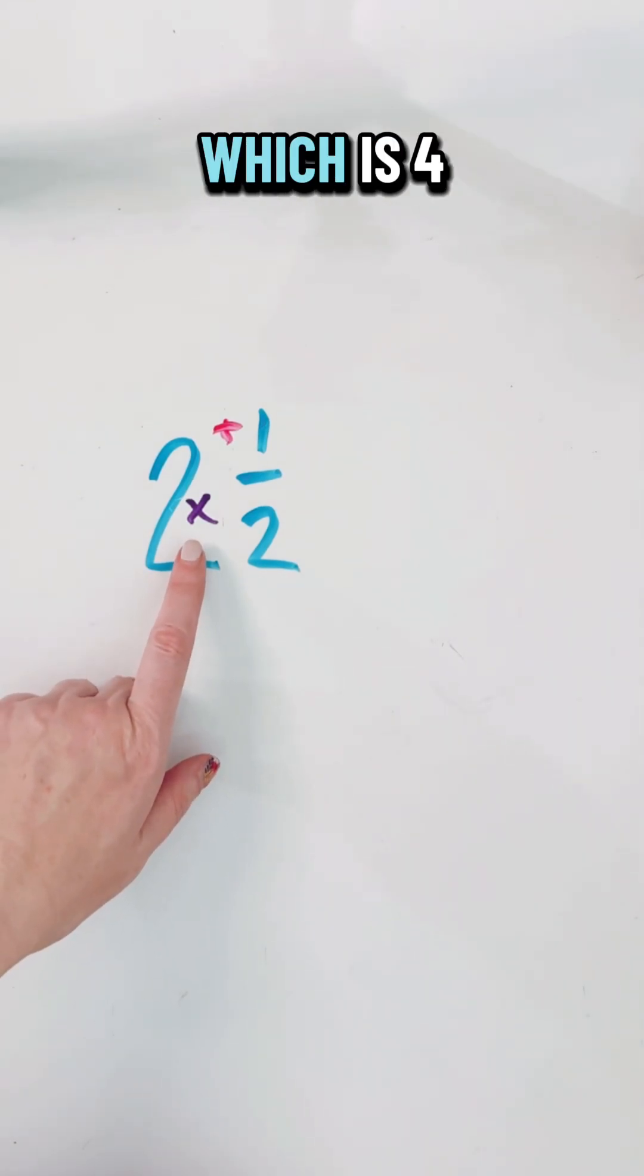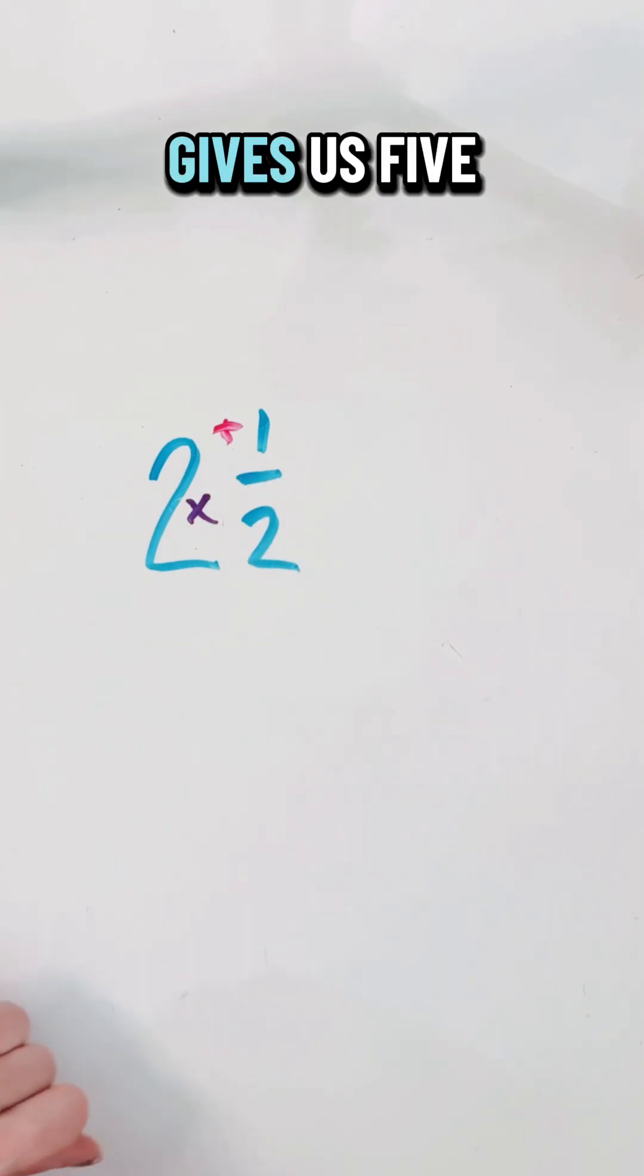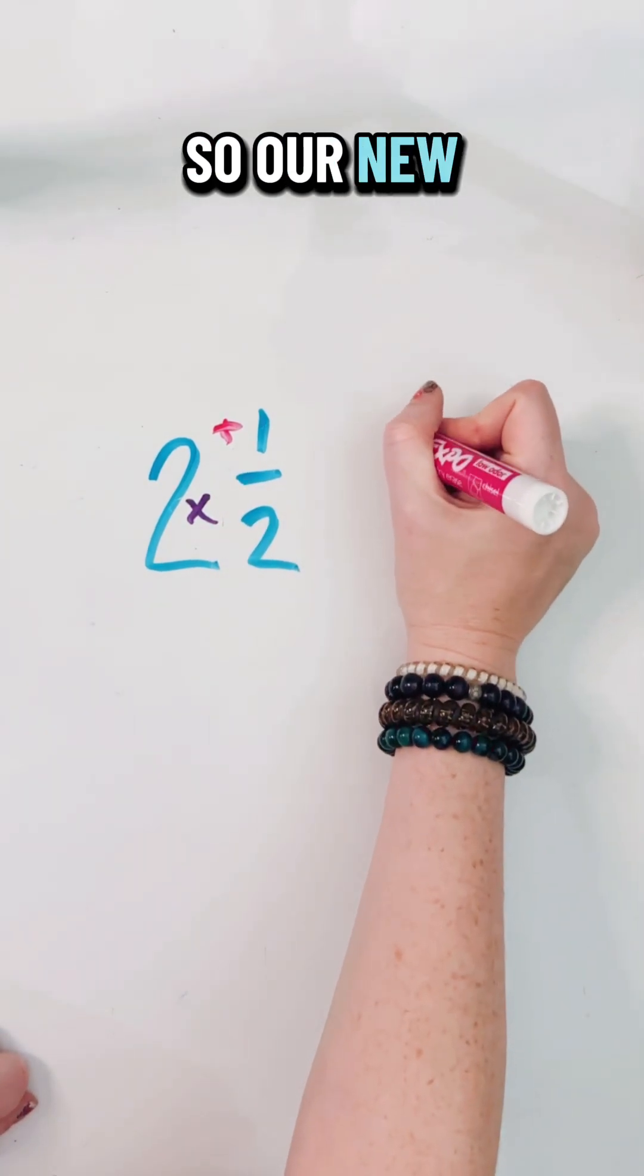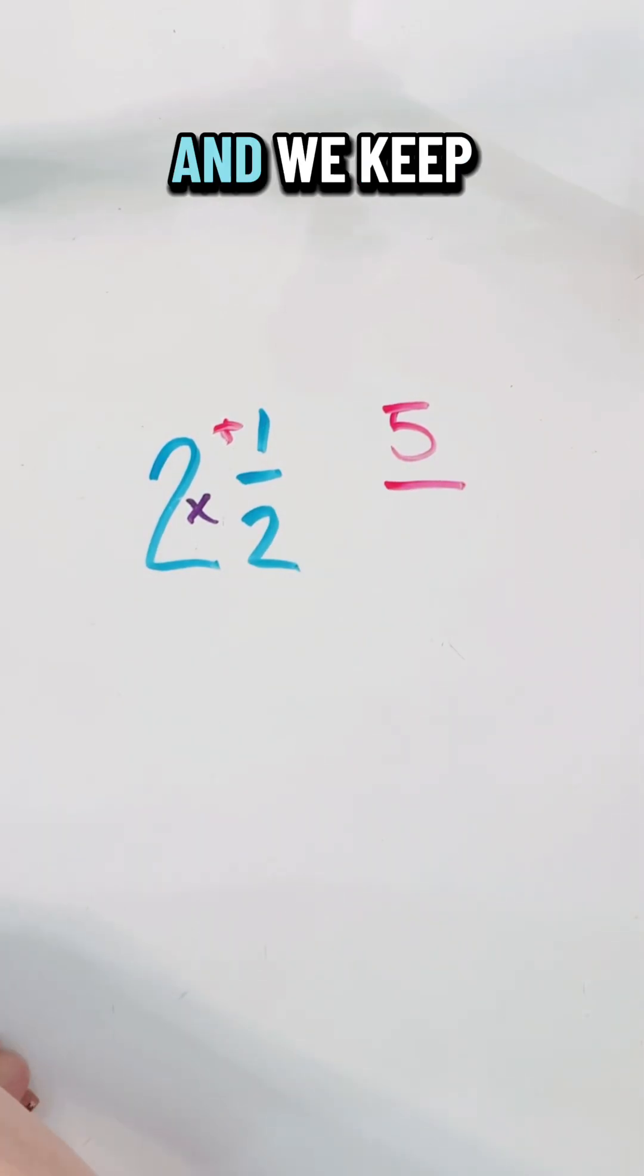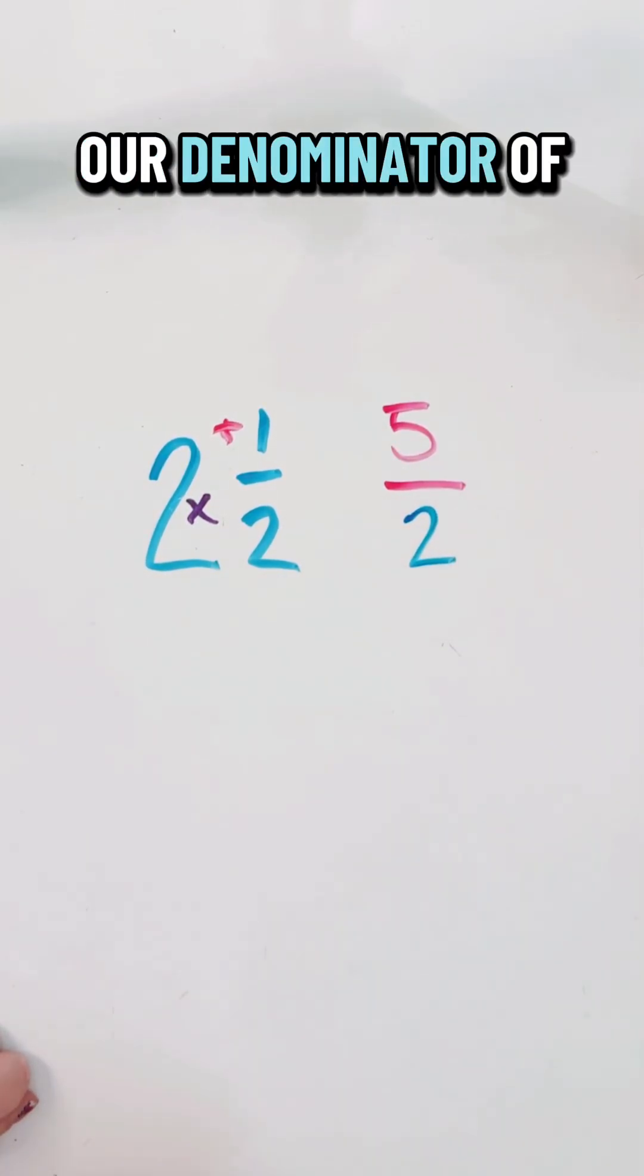So we're going to do two times two which is four, plus one, which gives us five. So our new numerator is five and we keep our denominator of two.